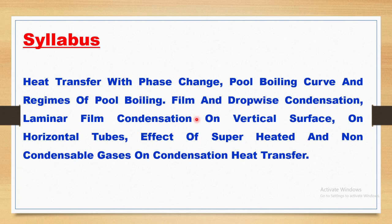The syllabus of this subpart of Unit 4 covers the following topics. It is mainly devoted to heat transfer, particularly convective heat transfer with phase change, including pool boiling curve and regimes of pool boiling, film and dropwise condensation, laminar film condensation on vertical surface and on horizontal tubes, and effect of superheated and non-condensable gases on condensation heat transfer.